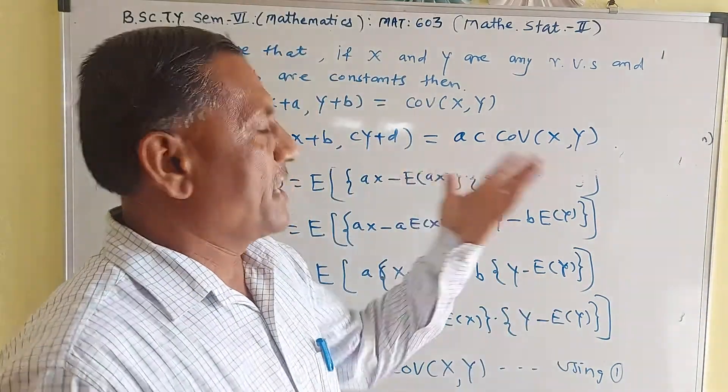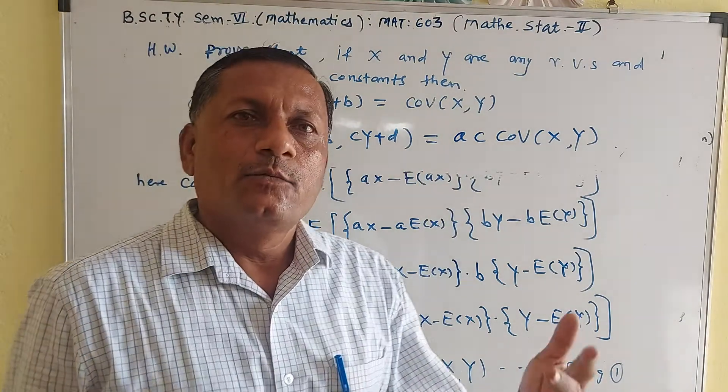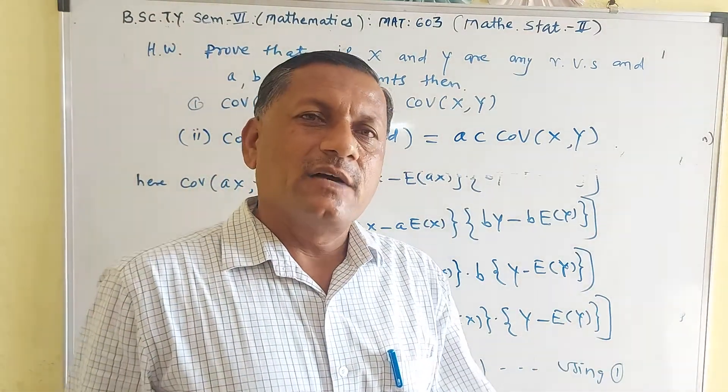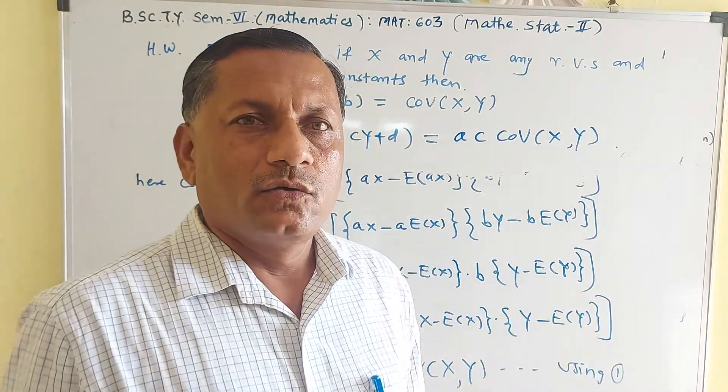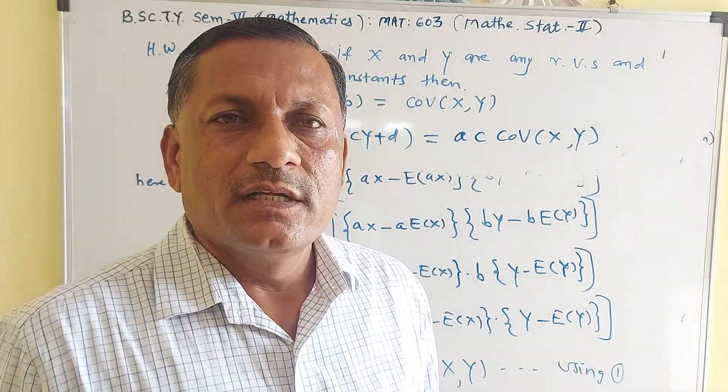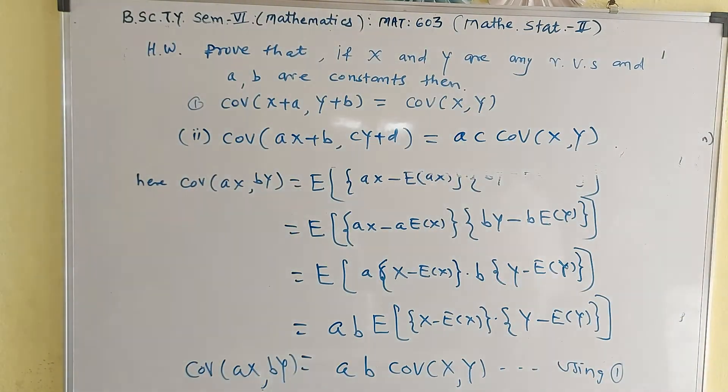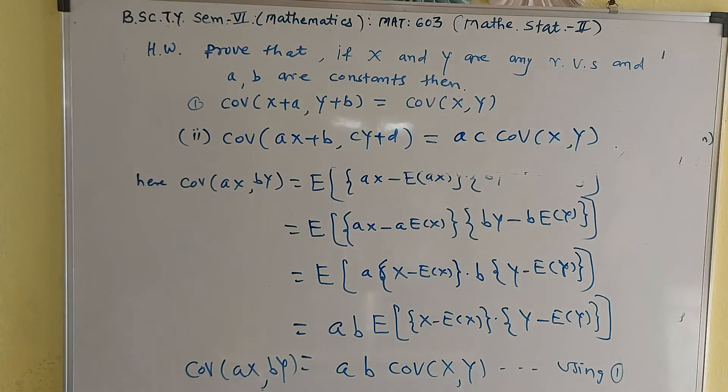So using the definition of covariance you prove these two results. In the next lecture we will see what is variance, and properties and examples of variance. We stop here — thank you.